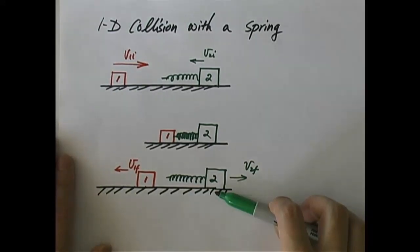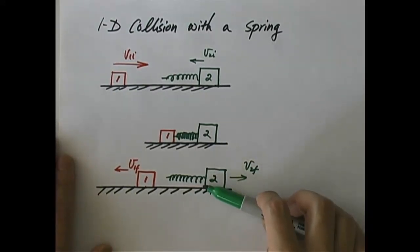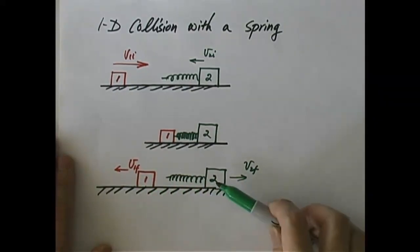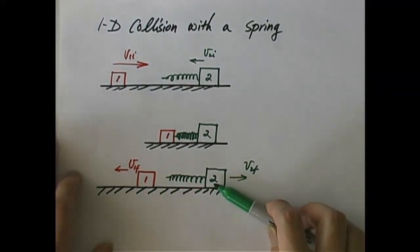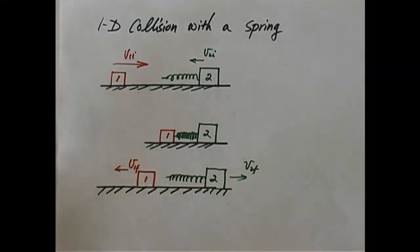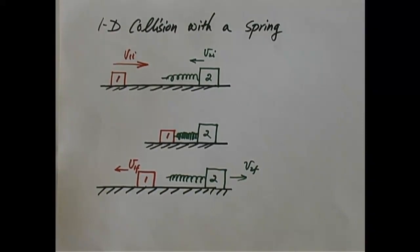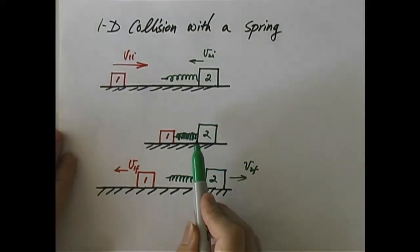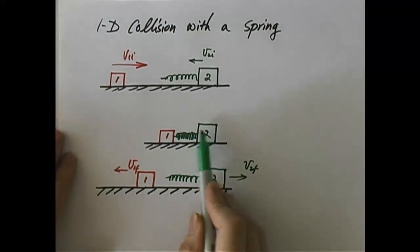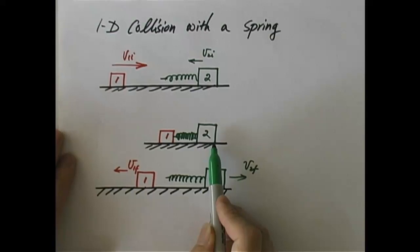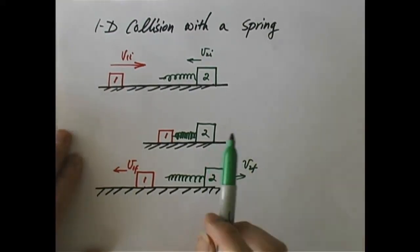Therefore, whether there is a spring or not, you still get the same exact V1 final and V2 final as we calculated before for a one-dimensional completely elastic collision. So in this sense, this problem is nothing new. However, it is interesting to look at what happens in the middle of the collision.